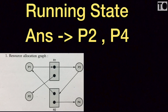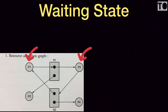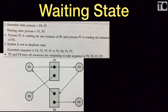P4 and P2 are in the waiting state. For the waiting state processes, P1 and P3 are waiting. P1 is waiting for an instance of R1, and P3 is waiting for an instance of R2.